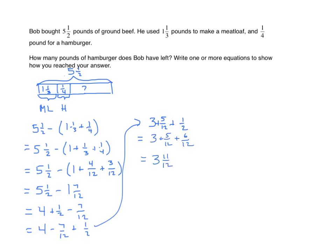We can also do this by a series of subtraction. I'll write another equation that would work equally well — repeated subtraction. So I would have five and one-half minus one and one-third minus one-fourth. And I can just go from left to right. I would look at this part of the expression first. I'll subtract the whole. So I now have four plus one-half minus one-third. I could subtract one-third from the one-half.